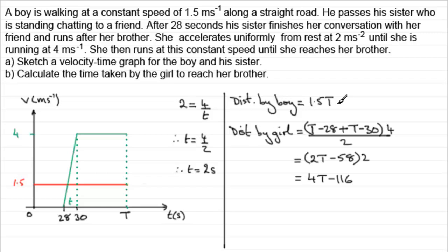Now we know that both these distances covered must be exactly the same. So we can say that therefore 1.5t must equal 4t minus 116. And so if we subtract 1.5t from both sides and add 116 to both sides we end up with 2.5t equals 116.